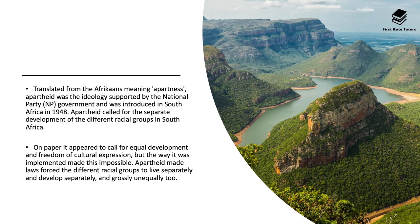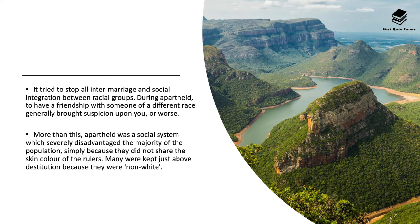Translated from the Afrikaans meaning 'apartness', apartheid was essentially the ideology supported by the National Party government and was introduced in South Africa in 1948. Apartheid called for the separate development of different racial groups in South Africa. On paper it appeared to call for equal development and freedom of cultural expression, but the way it was implemented made this impossible. Apartheid made laws that forced different racial groups to live and develop separately, resulting in gross inequalities. It also tried to stop all intermarriage and social integration between racial groups. During apartheid, having a friendship with someone of a different race generally brought suspicion upon you, or even worse. Apartheid was a social system which severely disadvantaged the majority of the black population simply because they did not share the same skin colour as the white rulers. Many were kept just above destitution because they were not white.